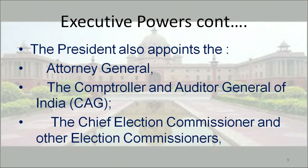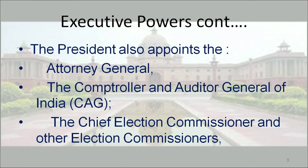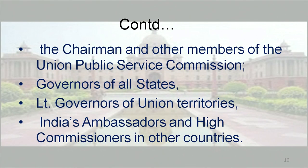Similarly, the governor has the right to appoint at the state level, and the chief justice is also considered while making appointments of judges. The president also appoints the attorney general, the Comptroller and Auditor General of India (CAG), the chief election commissioner and other election commissioners, and the chairman and other members of the Union Public Service Commission. Similarly, the governor does all these appointments at the state level, and state public service commissions are appointed by the governors.